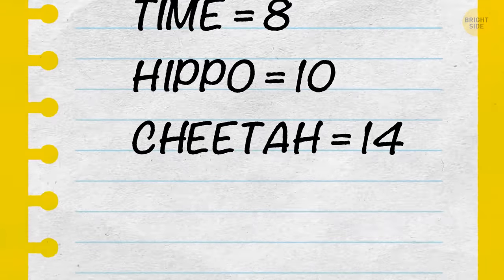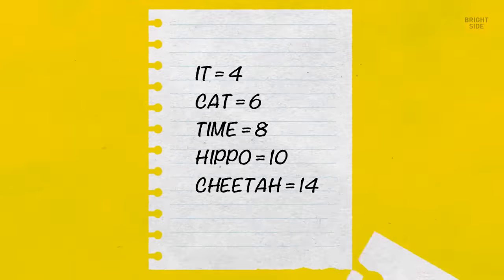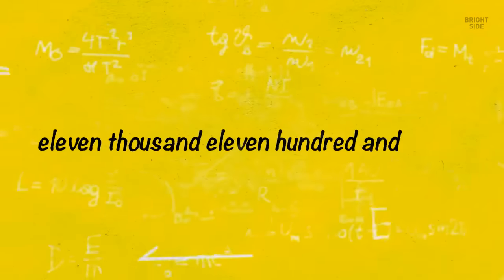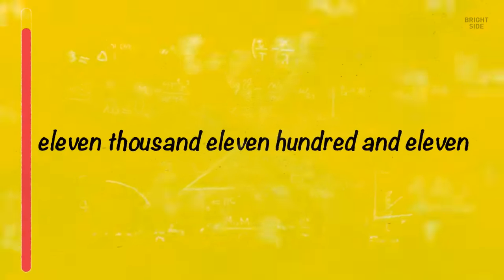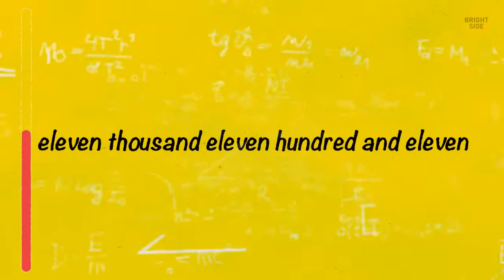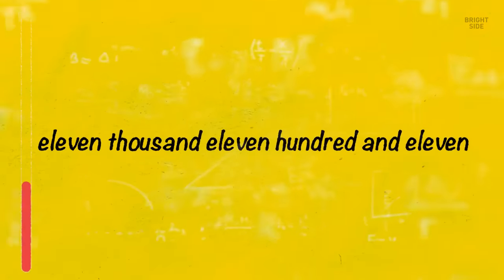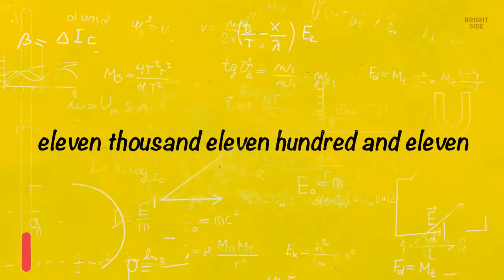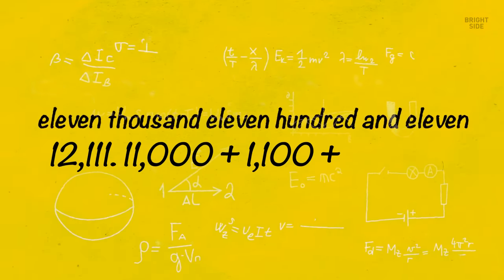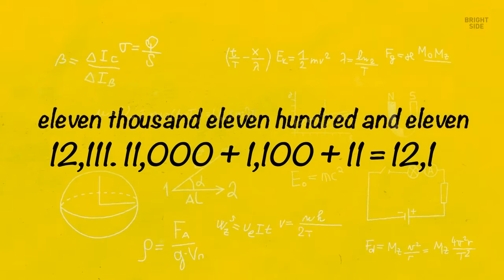The correct answer is 14. Each letter is worth two points. How can you write 11,111 in digits? 11,000 plus 1,100 plus 11 equals 12,111.